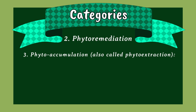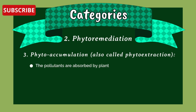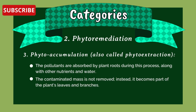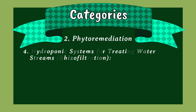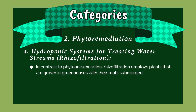(3) Phytoaccumulation, also called phytoextraction: pollutants are absorbed by plant roots along with other nutrients and water; the contaminated mass becomes part of the plants' leaves and branches rather than being removed — mostly used for metal-containing waste. (4) Rhizofiltration uses hydroponic systems for treating water streams; plants are grown in greenhouses with their roots submerged in water.